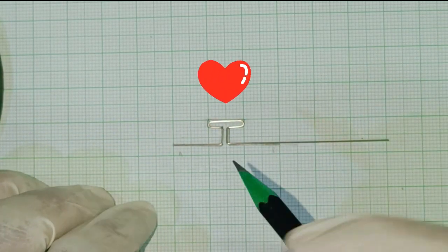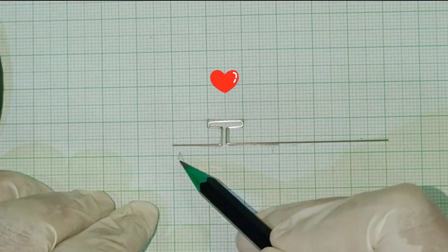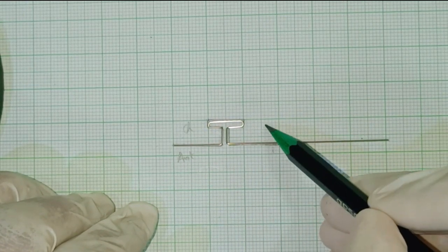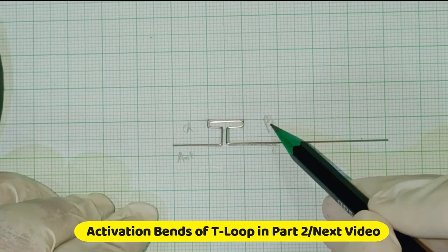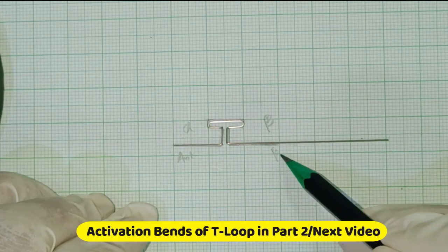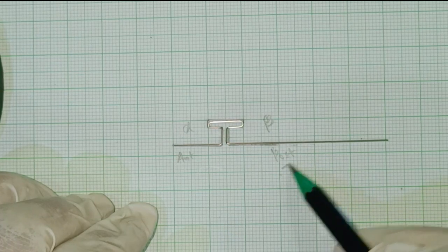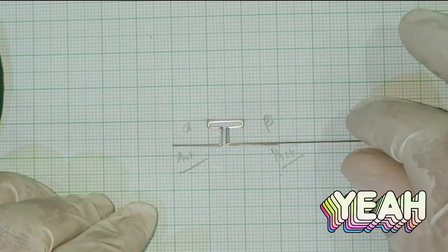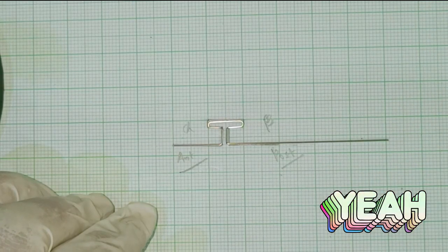You can see from the camera angulation it seems like it's not symmetric but it's very well symmetric. If we give the activation bend then this will be quite distorted again. So if there is a minor discrepancy then no need to worry.